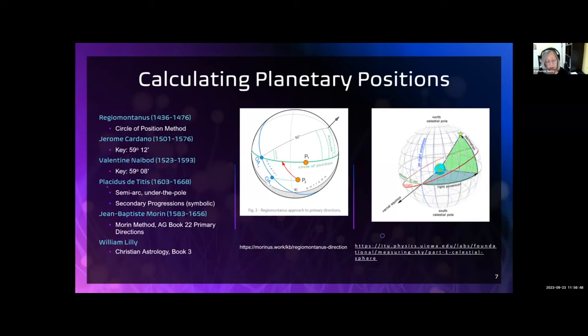Regiomontanus's method used circles of position which rely on rather complicated spherical trigonometric calculations of two great circles related to the planets and the meridian. Placidus's semi-arc method finds the planetary positions along the celestial equator, which is called right ascension, and it uses the declination to find the exact position.